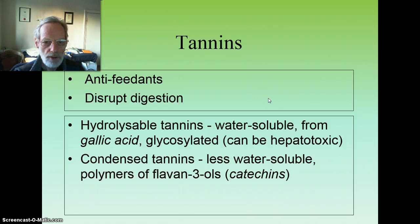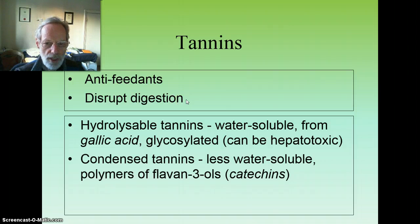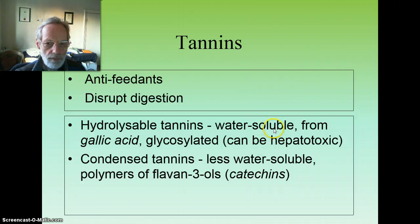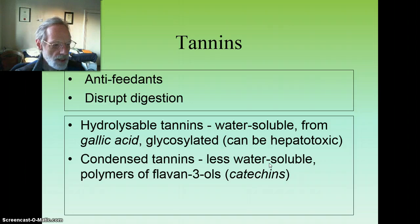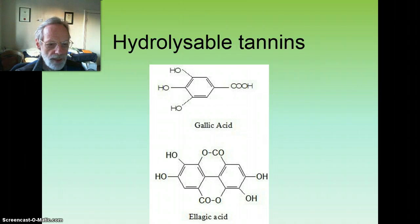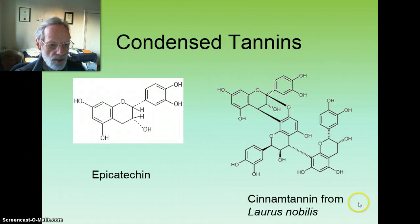Tannins are phenolic compounds which for plants are anti-feedants. They disrupt digestion in insects and higher animals by binding to proteins. They can be water-soluble, derived from gallic acids — these are the hydrolysable tannins, which are potentially hepatotoxic. In contrast, the condensed tannins are derived from catechins; they're less water-soluble and less damaging. Here are some pictures of hydrolysable tannins and condensed tannins.